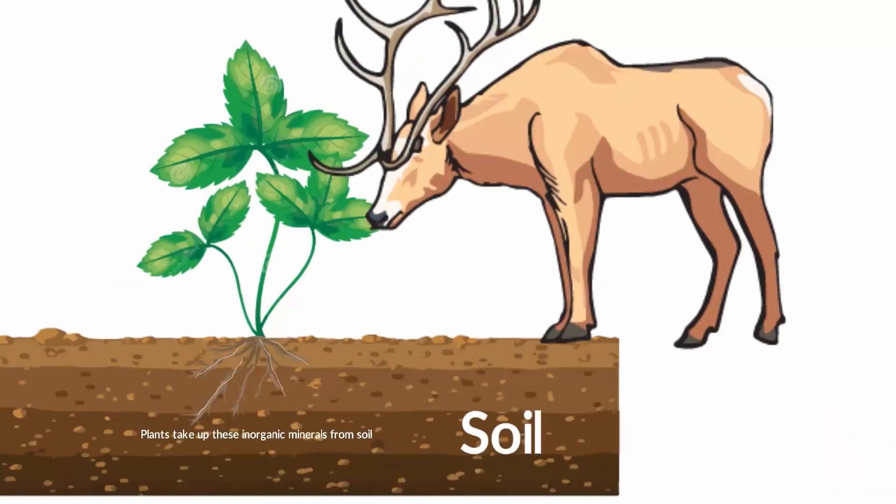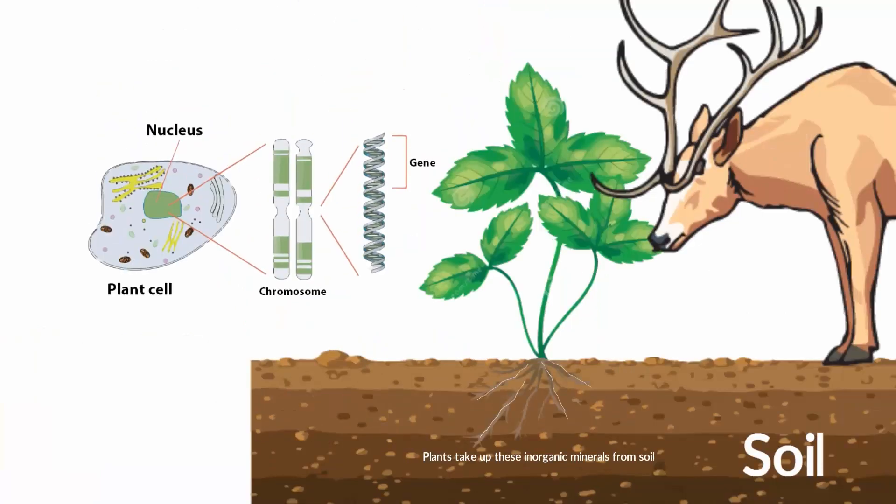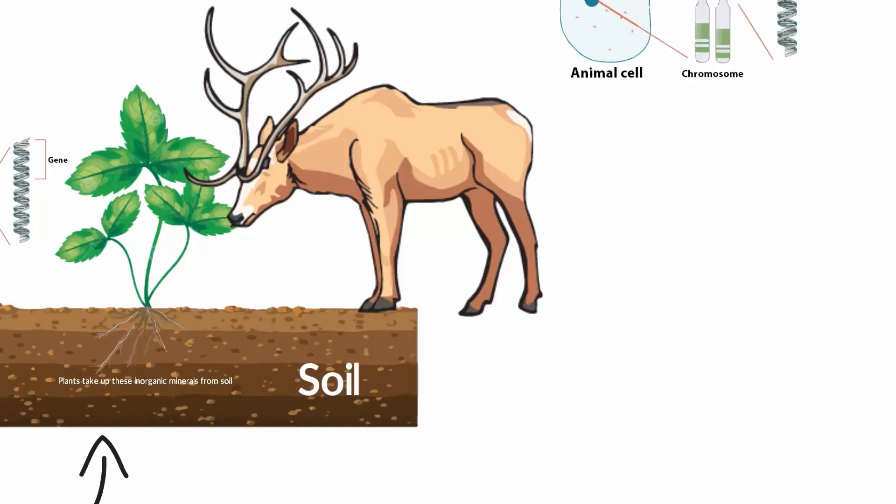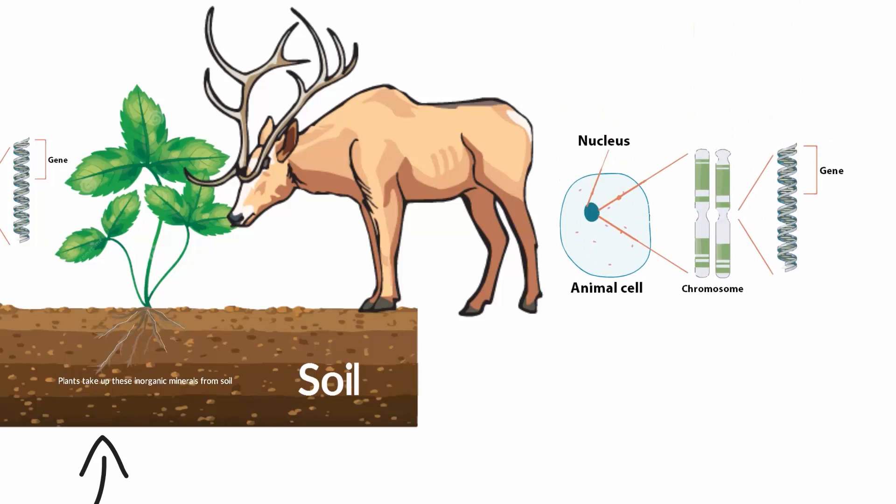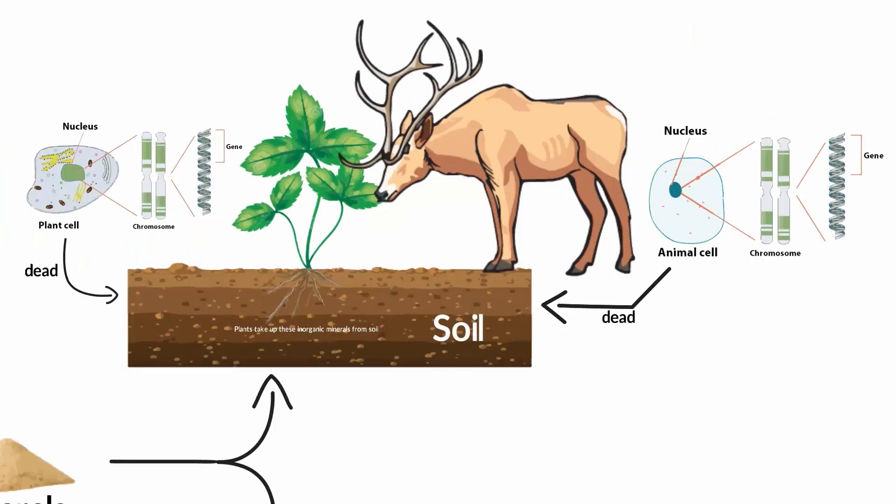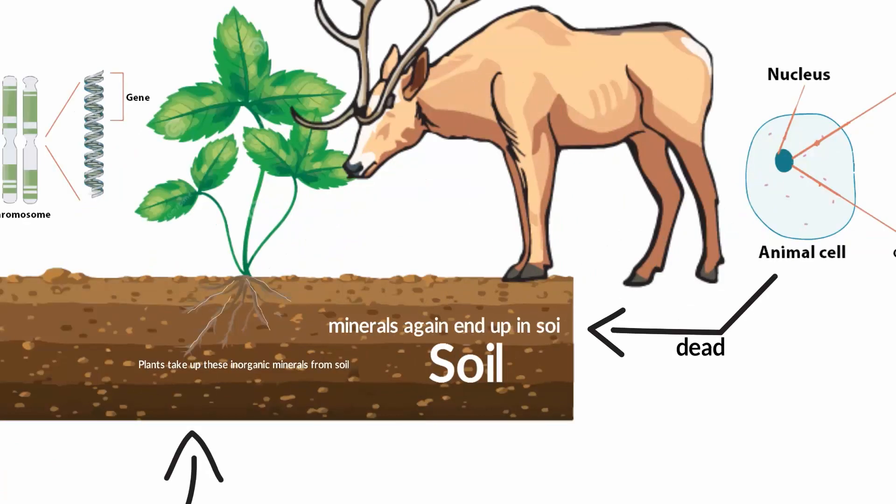Once the plants and animals consume these minerals, these minerals are now incorporated into their organic molecules such as DNA. When plants or animals die, they decay. These minerals become organic and they return to the soil.